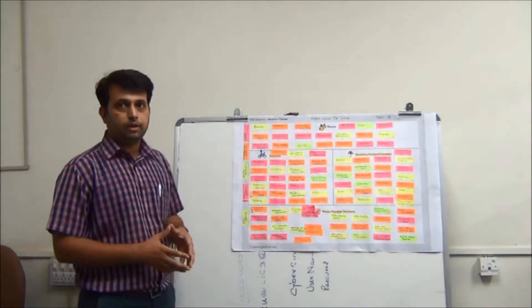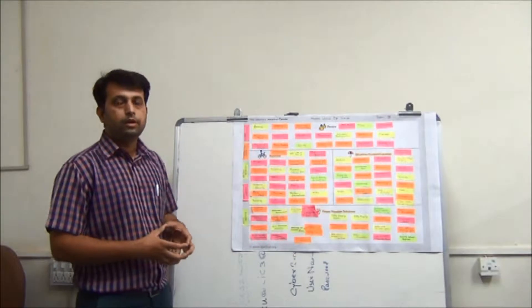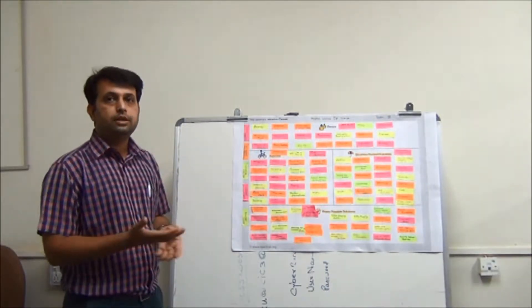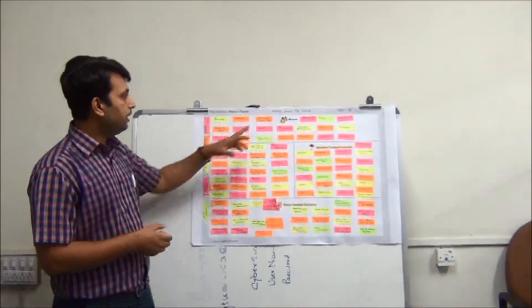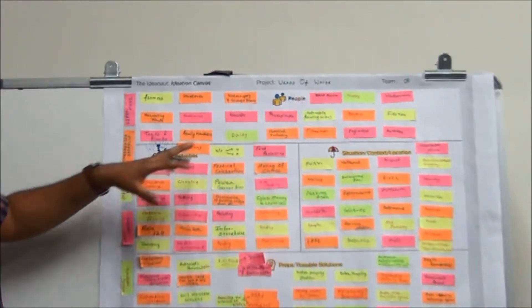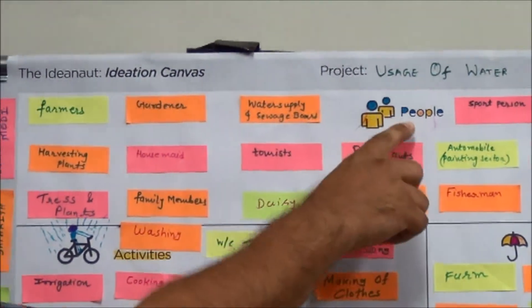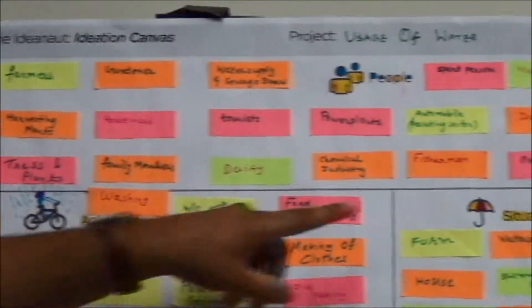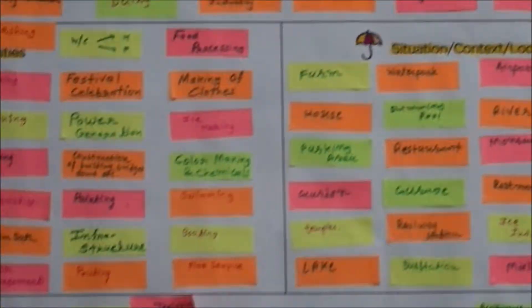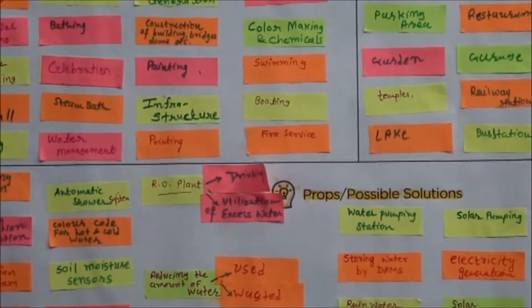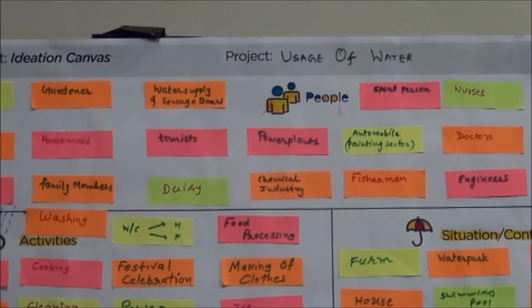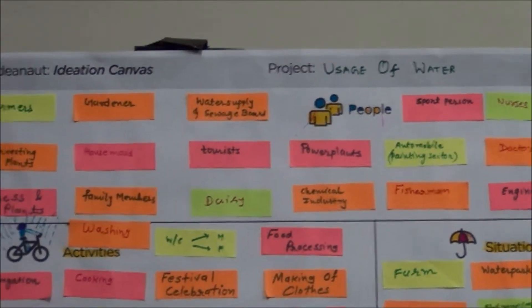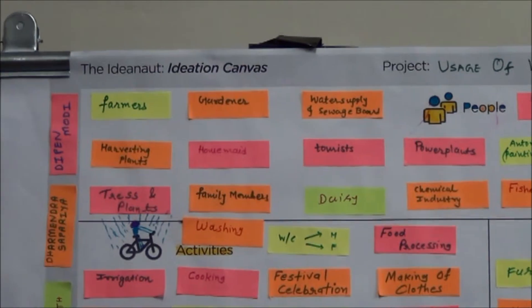As mentioned, in this program we have four canvases. This is the second canvas and probably the most important one, as all your ideas arising in your mind will go into this. The name is the Ideation Canvas. Our project name is Usage of Water. This sheet is divided into four parts: people, activities, situation or context or location, and props or possible solutions. The people section covers who are going to use the water.